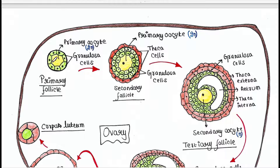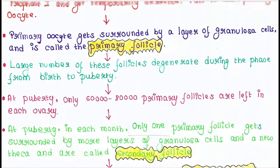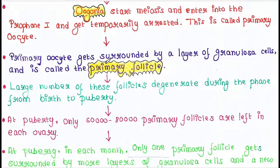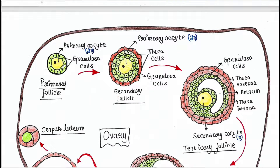The primary oocyte is a diploid cell containing 46 chromosomes. This primary oocyte gets surrounded by a layer of granulosa cells, and this whole unit is called the primary follicle. So, primary follicle means the primary oocyte which is surrounded by a layer of granulosa cells.